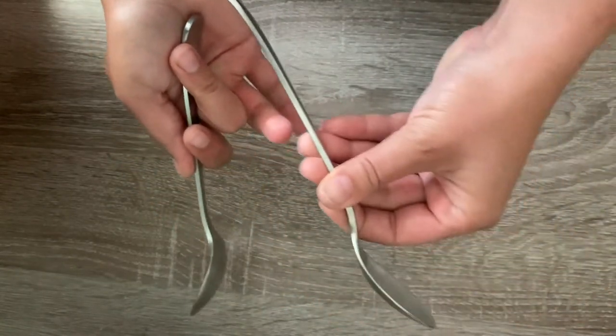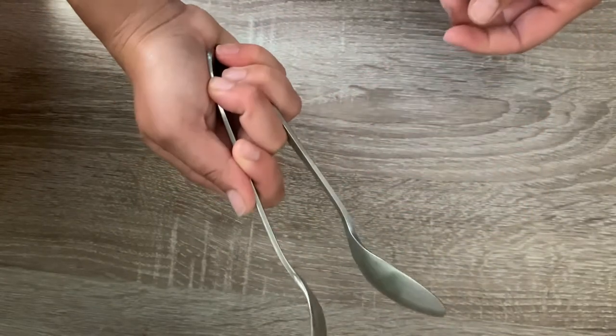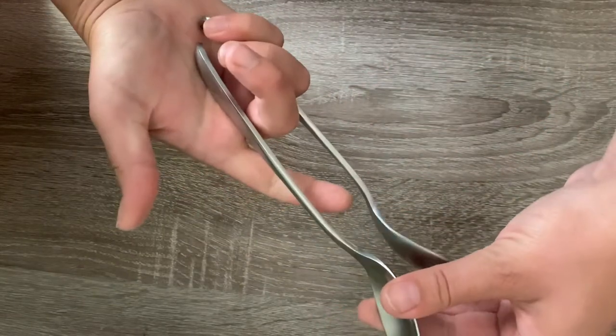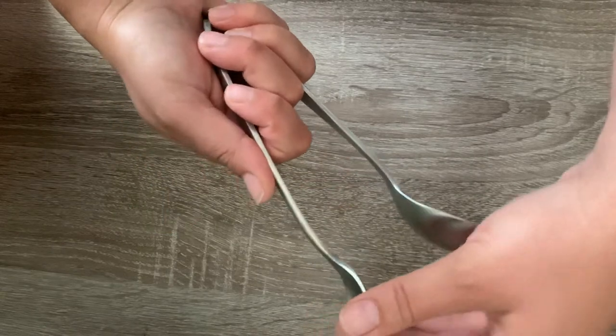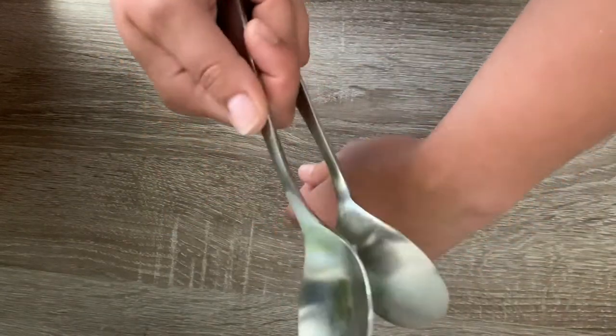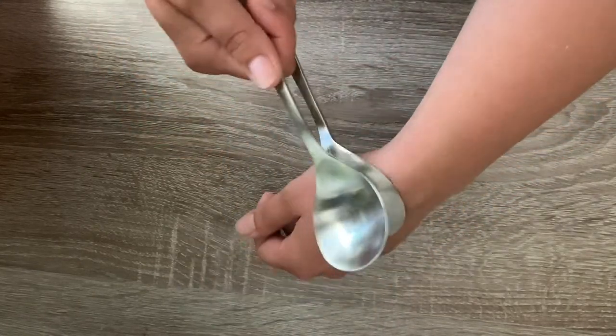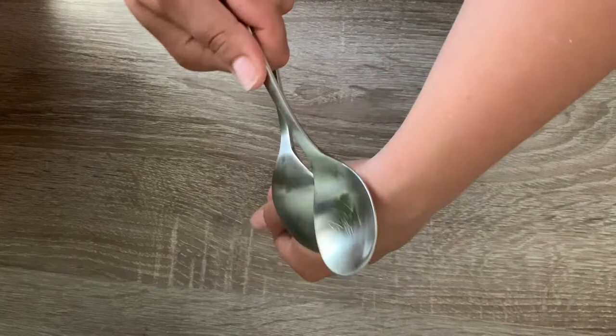Bottom spoon, facing outwards, has to go between your bottom two fingers. Top spoon is going to go between your last finger and your thumb and that's what's creating the sound.